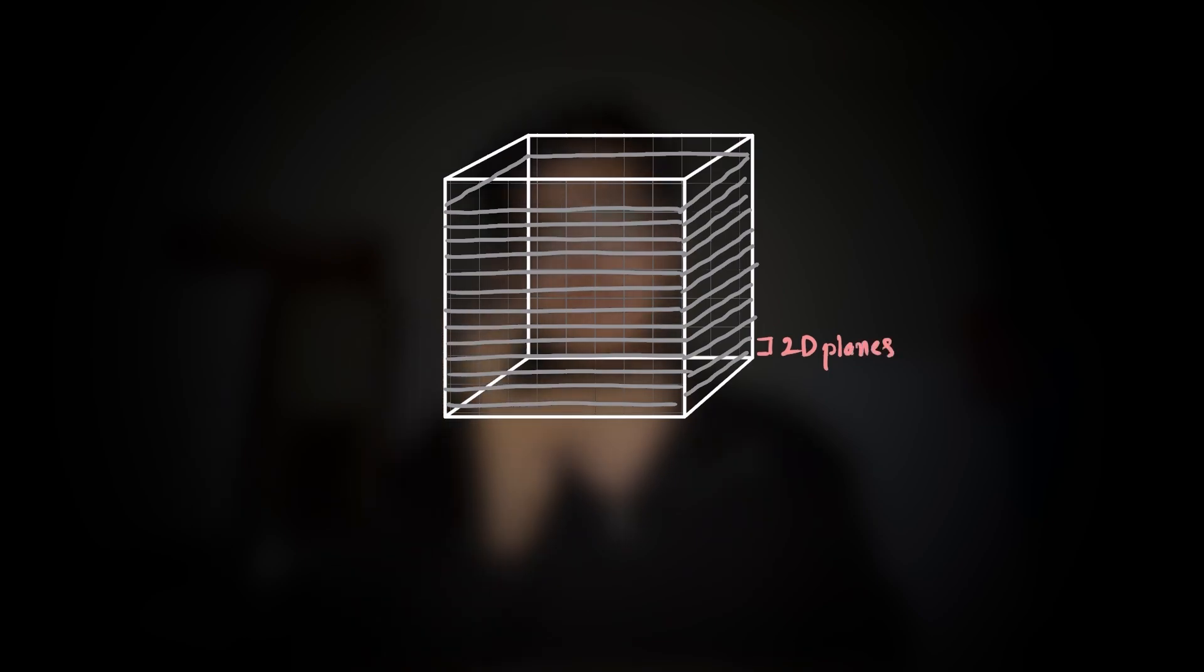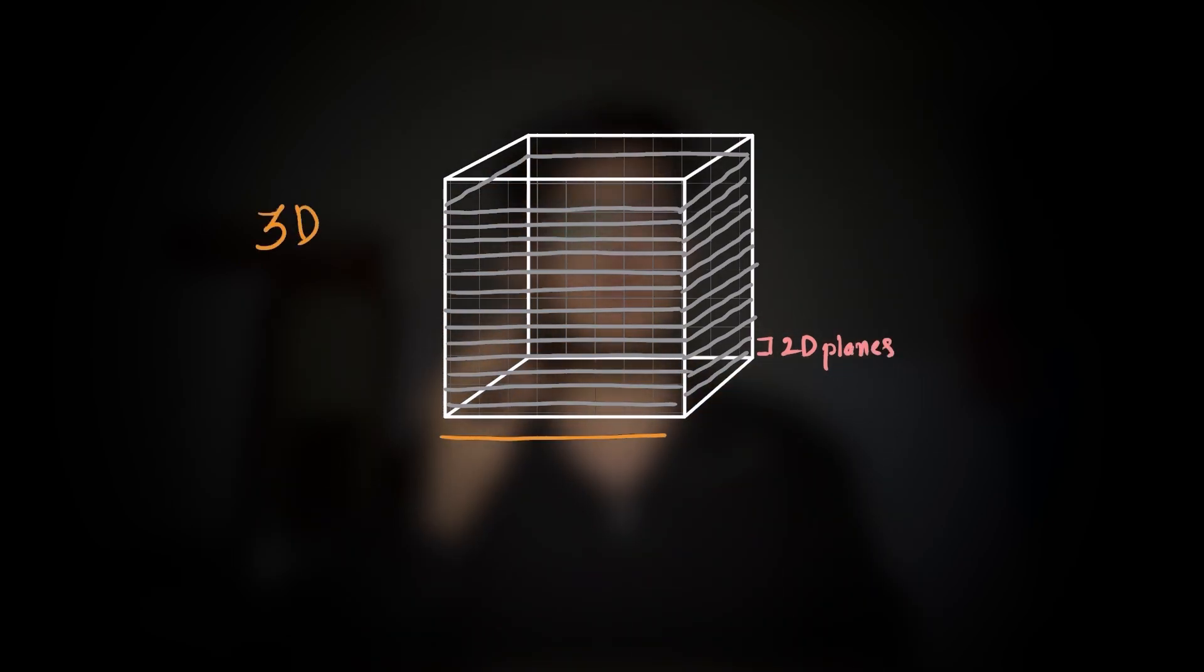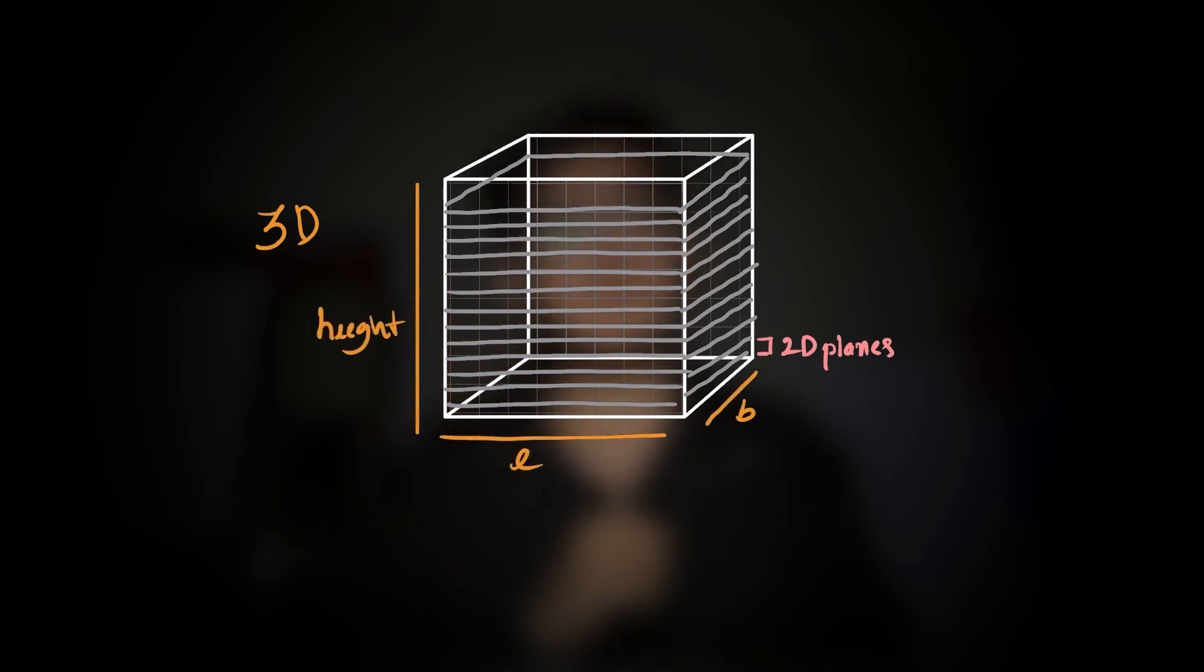Now if we take a 2D plane and stack multiple variations of it, we get 3D. That's our reality. Our objects have length, width and height. Just like a 3D cube casts a 2D shadow, our 3D world might just be a projection of something higher dimensional. This is where things get really interesting.